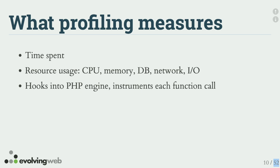A profiler like Blackfire hooks into the PHP engine and instruments each function call. Instrumentation roughly means you're adding manually at the start of each function call a microtime, saving that, then at the end of each function getting another microtime, subtracting the difference, and that's your inclusive time. For every nested function call, it measures that too and calculates all that. A profiler gives you a big graph of that to analyze.